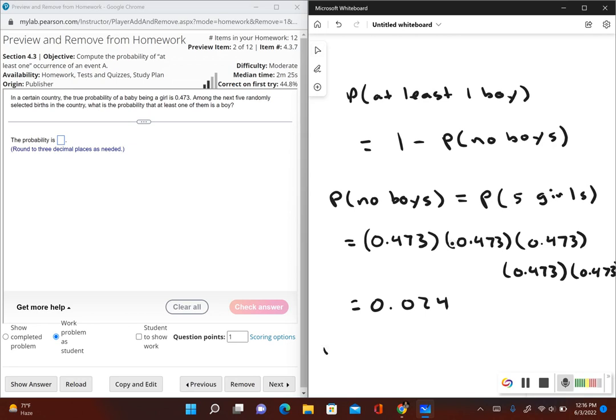So now the probability that at least one of them is a boy. So the probability that at least one boy. We're going to go ahead and take the result that we just found and subtract it from one. So this would be 1 minus 0.024.